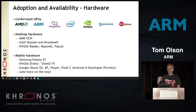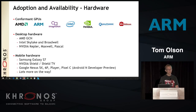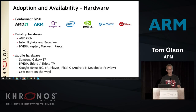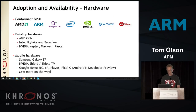On the mobile side, we don't have installable drivers typically, so rollout will be slower. But Galaxy S7 and NVIDIA Shield TV support Vulkan under Android M. And Google has announced that Android N will support Vulkan. If you're a developer with access to the developer preview, a couple Nexus devices and the Pixel C have drivers in the current developer preview build. Android N will go live in the not too distant future, and at that point you will see Vulkan drivers all over the place.